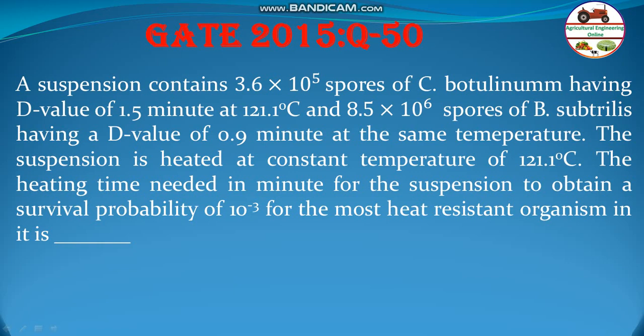First of all, you need to know what is D value. D value is the time where the death of the microorganism actually happens — where the number of microorganisms reduces by 10 times.